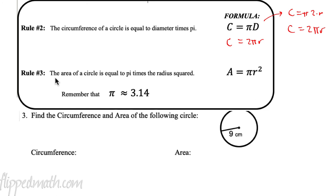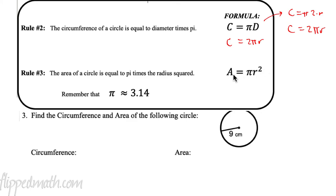The next rule is the area of a circle. We won't get into why because that involves some heavy math, but the area of a circle equals pi times the radius squared. Squared means times itself, so it's pi times the radius squared.